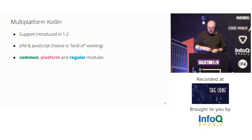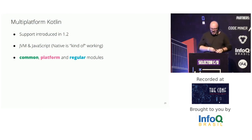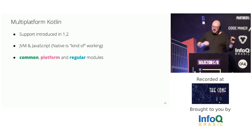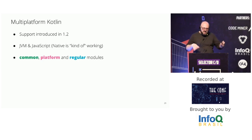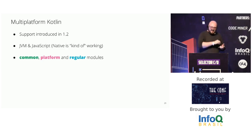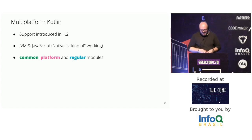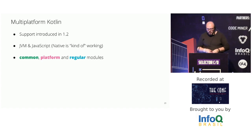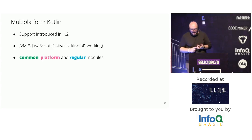Multi-platform support for Kotlin was added in version 1.2, initially as experimental, supporting code sharing between JVM and JavaScript projects. Native, as it's being actively developed, is not precisely supported but works with some minor tweaks. When developing multi-platform projects with Kotlin and Gradle, there are three types of modules: the common, the platform, and the regular.